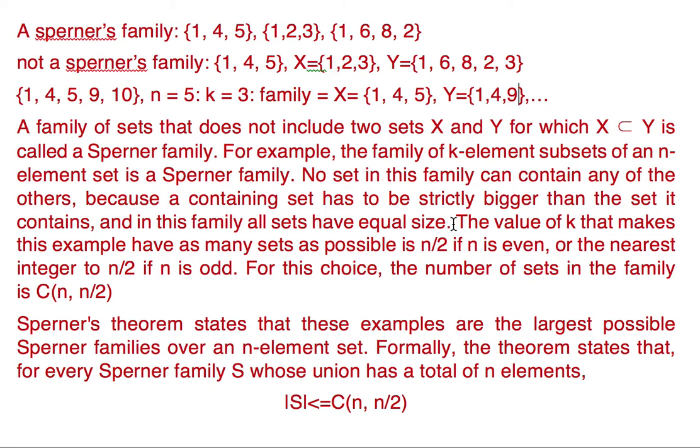Now how many sets will be in the family? The number of ways in which we can choose 3 elements out of 5. So that is 5C3. So if we consider k as 2, it will be 5C2. If we consider k as 1, it will be 5C1, that is only 5 subsets.